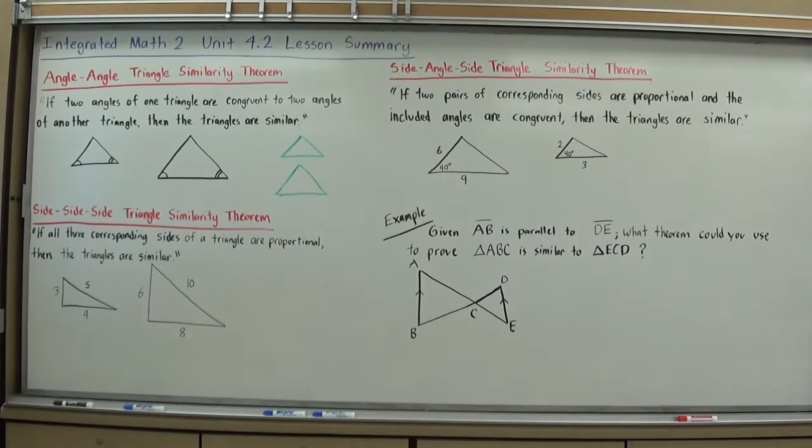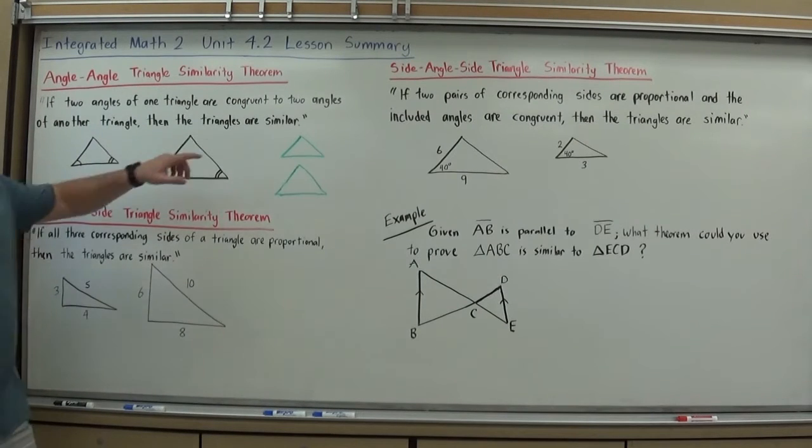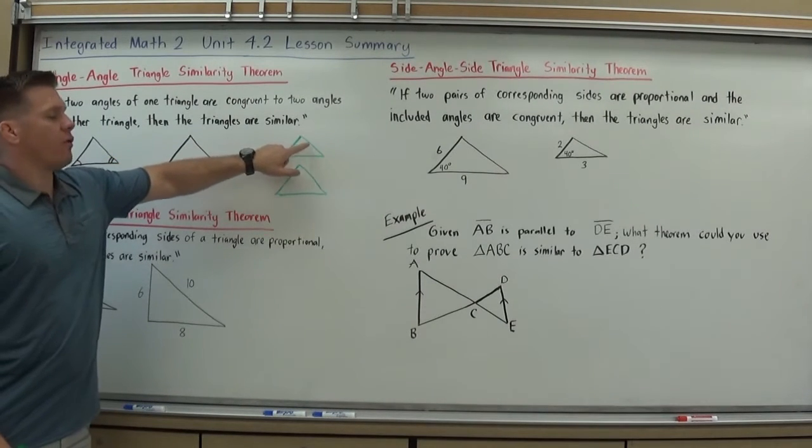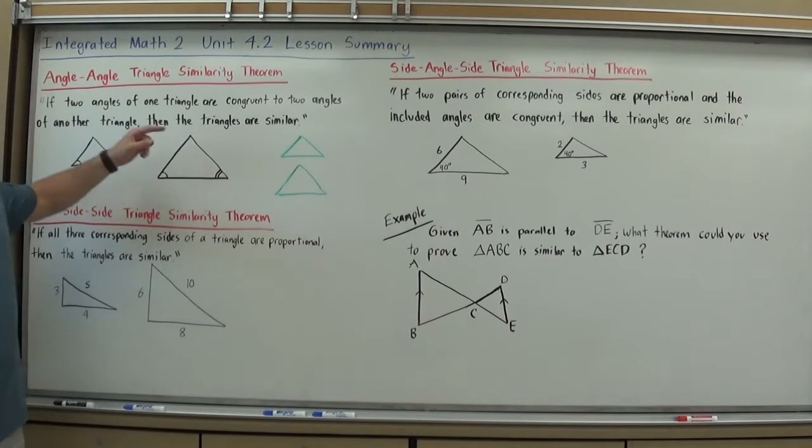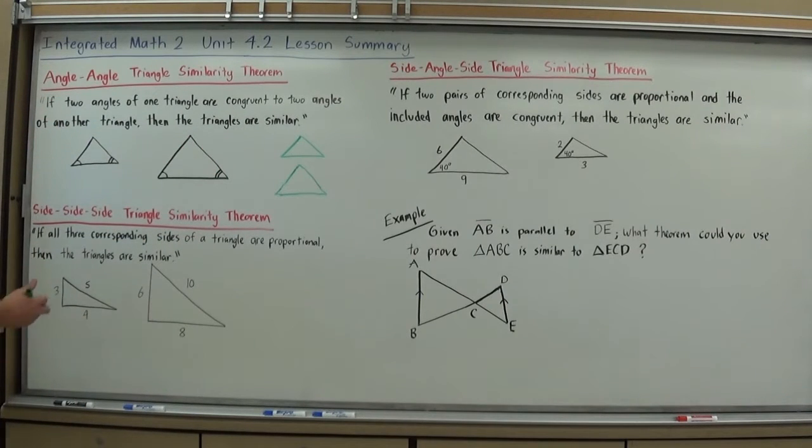So if all three angles are the same, they are similar triangles. Obviously my drawing is not doing that much justice, but you get the idea. The reason why we don't have to actually have all three angles, though, to prove that they're congruent, we can just do angle-angle, is because of the triangle sum theorem.